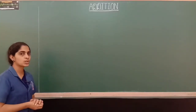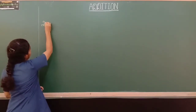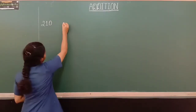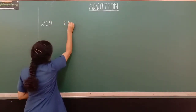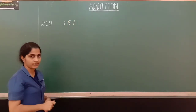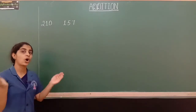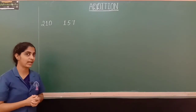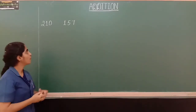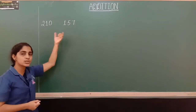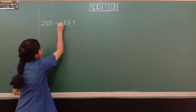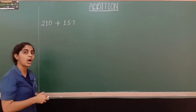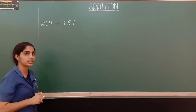We know that Suma planted 210 saplings, whereas Vina planted 157 saplings. Now, we have to find out altogether how many saplings they have planted. We have to add these two numbers. Let us learn how to add these two numbers and find out the answer.